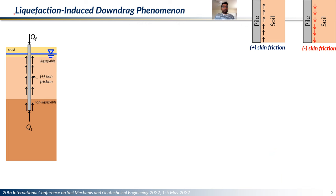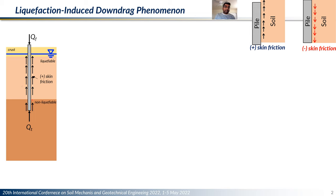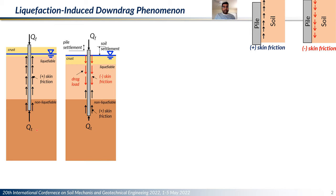Let me briefly introduce you to the liquefaction-induced down drag phenomenon. Consider a pile with its tip resting in a dense non-liquefiable sand layer, passing through a loose liquefiable sand layer. Under static conditions, when a head load is applied on the pile, the pile resists that load by developing positive skin friction on the shaft across the length of the pile and then positive tip resistance. When an earthquake comes, the loose sand layer liquefies and settles down, resulting in the development of negative skin friction at some length of the pile and then positive skin friction further below it.